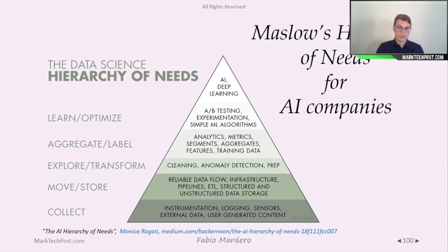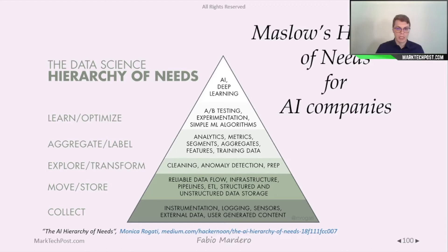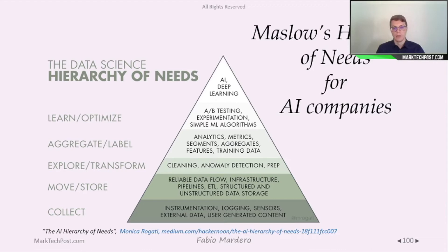With this data, we have to explore and transform it — aggregate, label, and get insights using analytics and metrics. Then we learn and optimize the data collection and infrastructure. For example, we do A/B testing and experimentation. And at the top of the pyramid, we can develop deep learning and complex machine learning models.